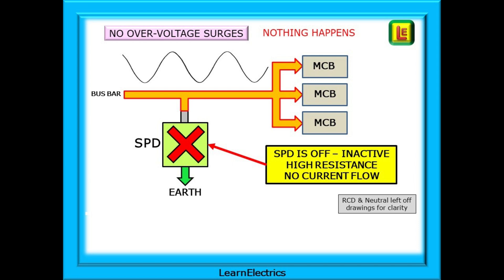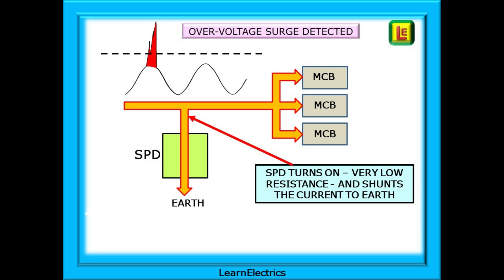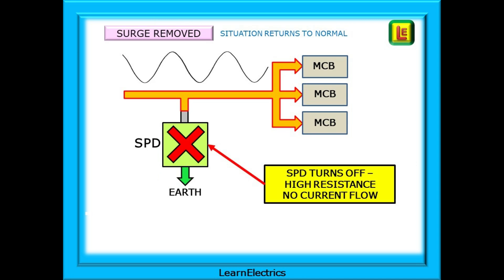Looking at this from the consumer unit side of things, a normal waveform is on the bus bar and travels across the top of the SPD to the circuit breakers and the rest of the installation. The SPD is in the off state — inactive, with no current flowing through it — just sitting there watching what passes across it. When a surge suddenly appears, the SPD turns on almost instantly and the metal oxide varistor material becomes an almost dead short to earth, grounding the surge and preventing possible damage to installation equipment. Then, just as quickly, the varistor returns to high resistance. The SPD is in its off state again, waiting for the next surge. With luck, equipment downstream will not have even sensed a disturbance.